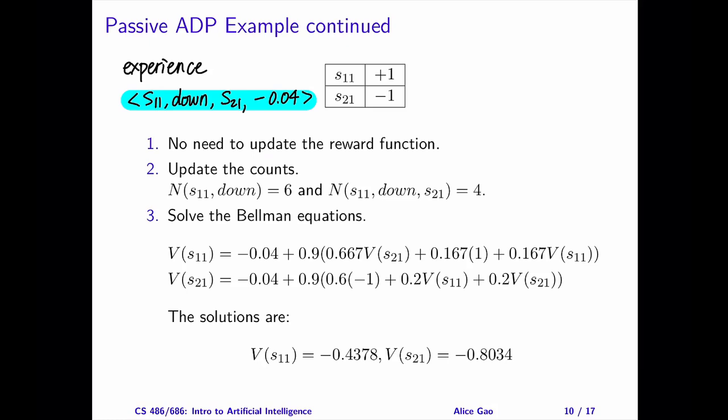We have observed this reward before, so there is no need to update the reward function. For the counts, N of S11 and down should be 5 plus 1, which is 6. N of S11 down S21 should now be 3 plus 1, which is 4.